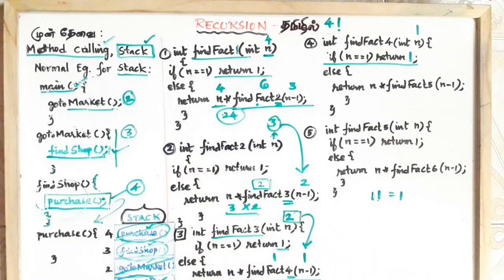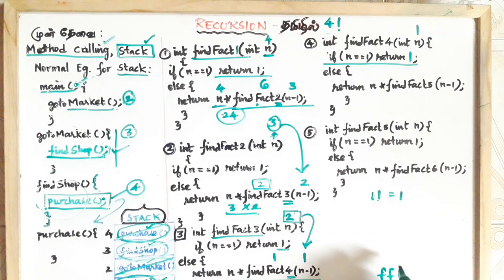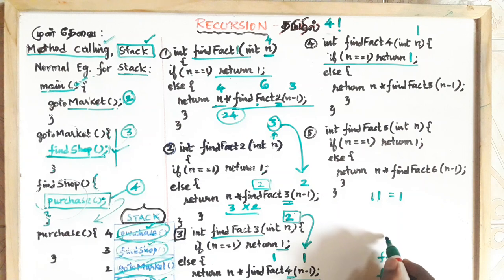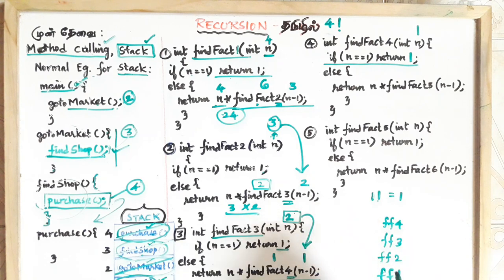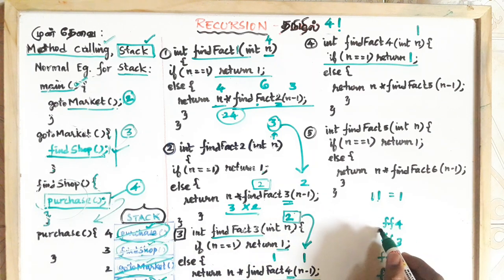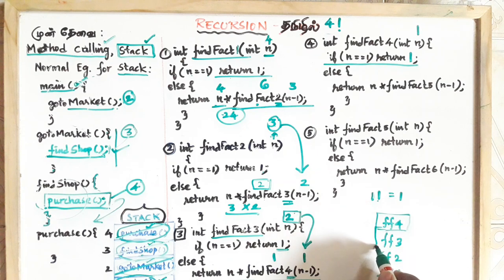How is this flow? In this stack, there is findFact 1, then findFact 2, then findFact 3, then findFact 4. That is the program. If we had 5 factorial or 6 factorial, the stack would have: 5 factorial 4, 5 factorial 3, 5 factorial 2, 5 factorial 1.